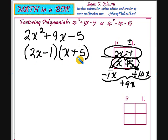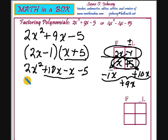We found our two binomials. If you will multiply this out, 2x times both of these would be 2x² + 10x. Now, take the -1 and multiply it times both of these. You'll have a -x - 5.